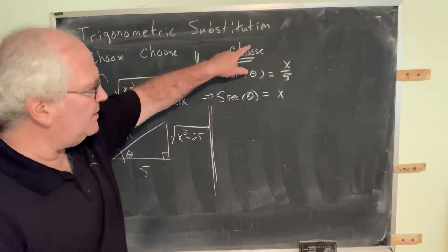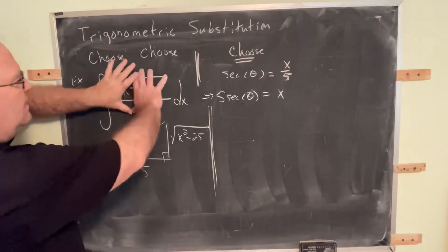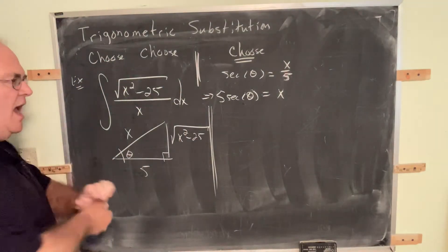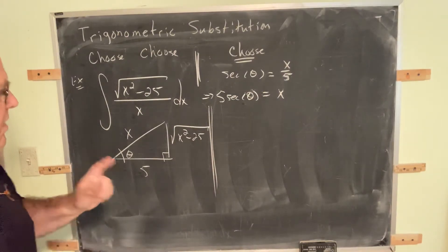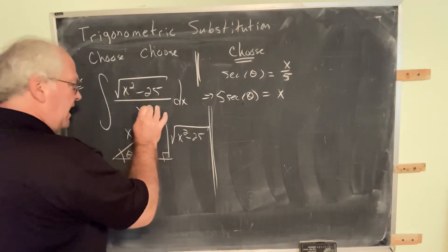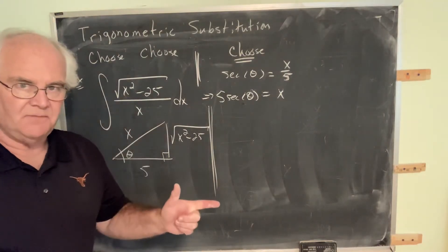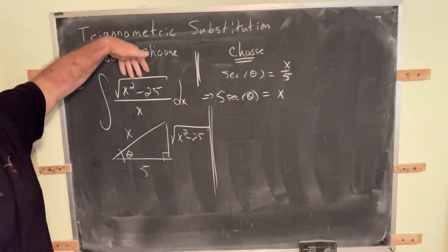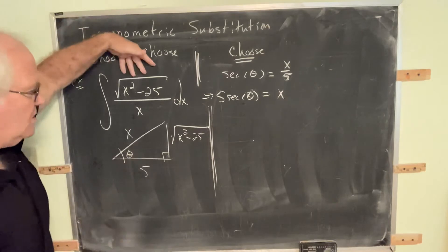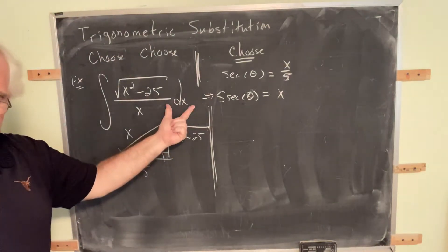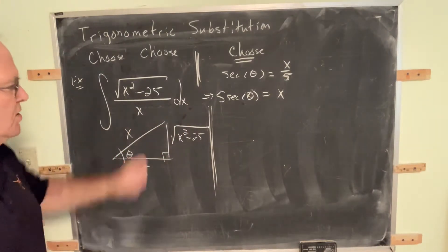In this first choose, the rationale is we need to take everything in this problem that's in the x language and translate it into the theta language. Now, every problem in the x language always has two things. It might have more, but it always has two things. One thing it has is this radical. Because if it didn't have the radical, we wouldn't be doing this trigonometric substitution in the first place. So, it always has a radical. And it always has a dx.